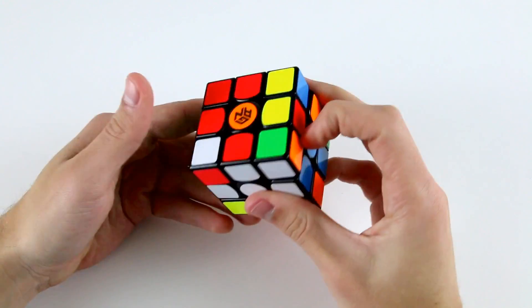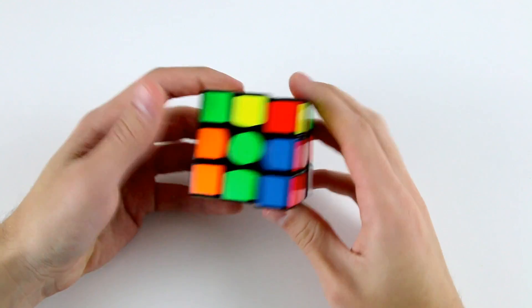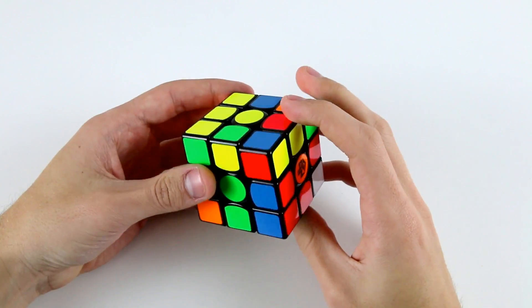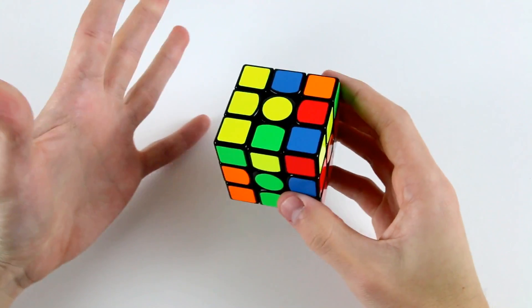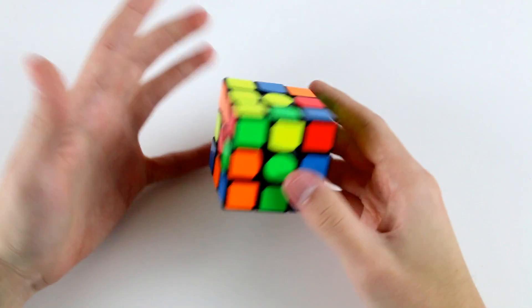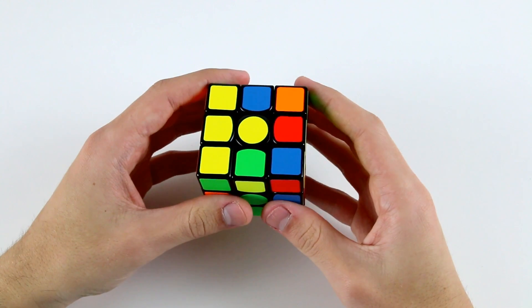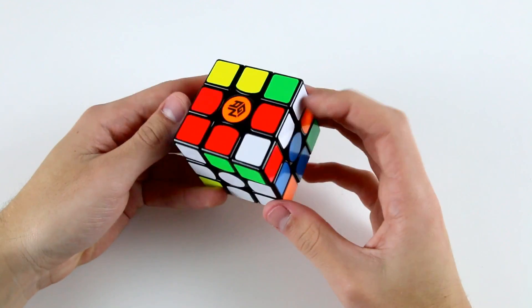We can solve them incorrectly by just doing one move like that. Also note that if we do a D2 R D2 R prime to solve the cross correctly, then we wouldn't be able to see, or it would be quite difficult to see, our first F2L pair and we wouldn't have a particularly easy case.